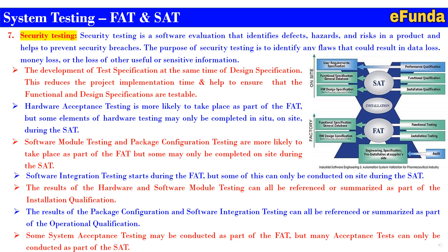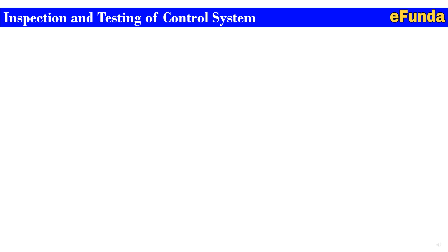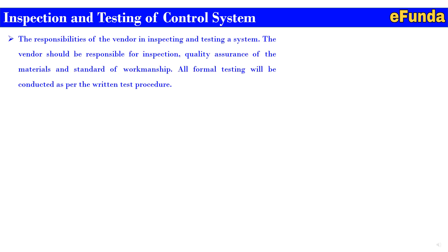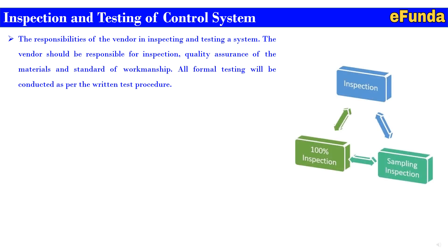Now moving on to inspection and testing of the control system. For better understanding, we will see a simplified version of this inspection and testing. The responsibilities of the vendor in inspecting and testing a system — one can refer to the figure where inspection, 100% inspection, and sample inspection are parts of the inspection. The vendor should be responsible for inspection, quality assurance of material and standard of workmanship. All formal testing will be conducted as per the written test procedure.